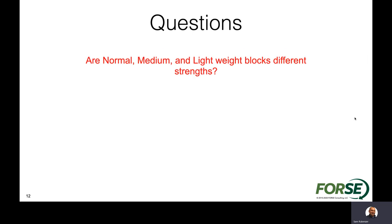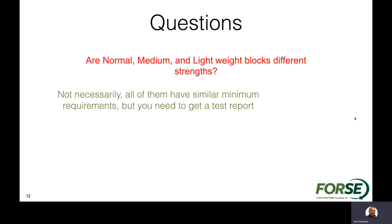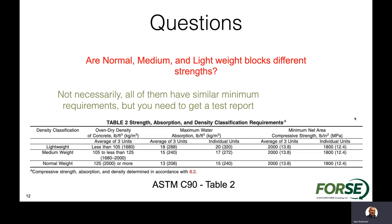A common question is whether normal, medium, and lightweight blocks are of different strengths. They're not necessarily different in strength. Looking at ASTM C90, all lightweight, medium weight, and normal weight blocks rely on the same minimum strengths. It really depends on different block manufacturers, mixes, and aggregates. I've seen lightweight blocks on the high end of strength and normal weight blocks all over the place. You really have to understand what the actual block manufacturer is making — it's not necessarily the case that lightweight means less strong.